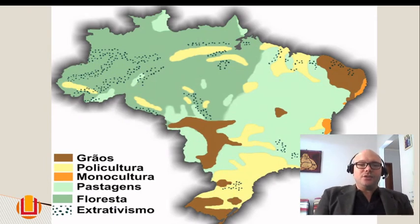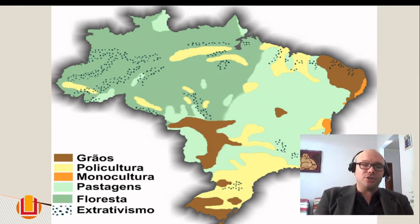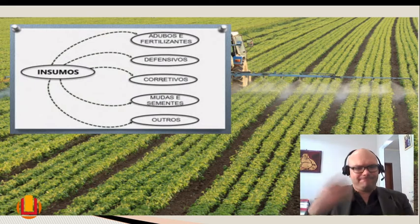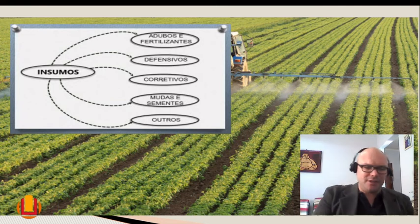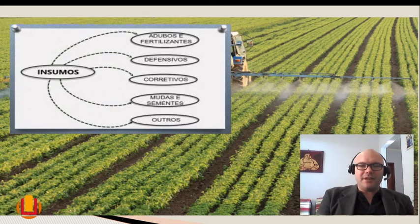Aqui está dividido o nosso Brasil nos seus sistemas de produção: grãos, policultura, monocultura, pastagens, florestas e extrativismo. Temos uma divisão no Rio Grande do Sul bem clara entre pastagens, produção de grãos e policultura. Quanto aos insumos, podem ser denominados das mais variadas formas — sanitarizadores, biobotânicos — mas nada vai mudar a importância da vida no solo. Sabemos que boa parte dos pesticidas, adubos e fertilizantes matam os micro-organismos componentes do solo.